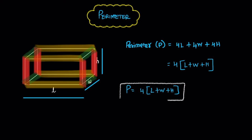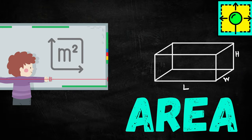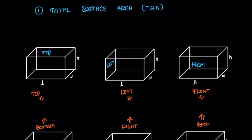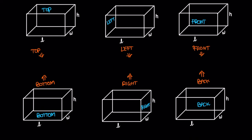So perimeter P is equal to 4 times of length plus width plus height. The perimeter P is equal to 4(l + w + h). Then we move to area. The total surface area includes all 6 faces. The first faces are top and bottom — both have the same area. They look like a rectangle, so the area is length times width.